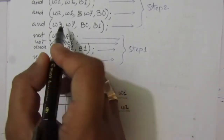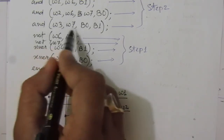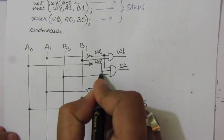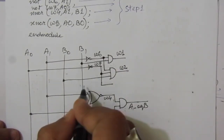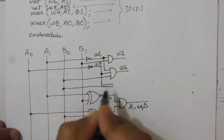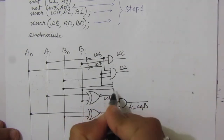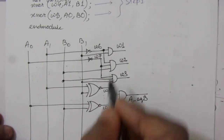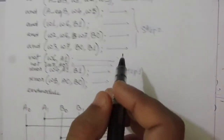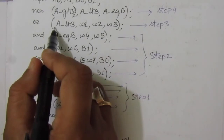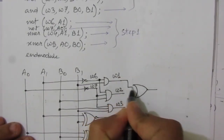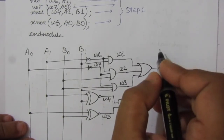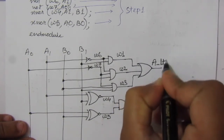For w3, we do the NAND operation between w7, b0, and b1. Take a line from w7, and two more lines from b0 and b1, place a NAND gate, and get w3. Step two is complete — we have w1, w2, w3, and a_eqb. In step three we find a_ltb by doing the OR operation between w1, w2, and w3. Place a three-input OR gate and get a_ltb.